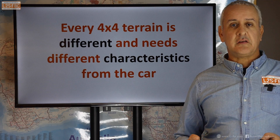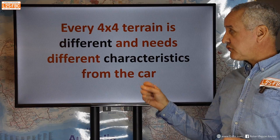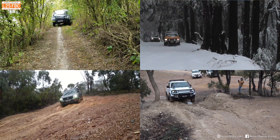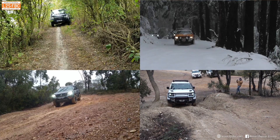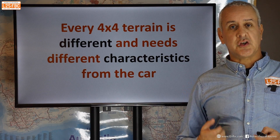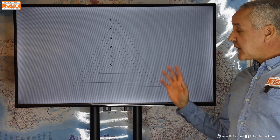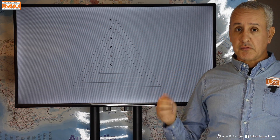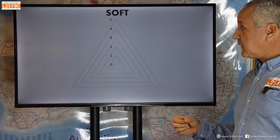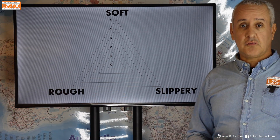To understand an ATS you've got to understand that every 4x4 terrain is different and needs different characteristics from the car — that's why we've had low range, locking differentials, etc. An ATS is just an electronic version of configuring the car for those terrains. You can think of every terrain as three types, or a combination of those three types: is it soft, is it slippery, or is it rough?